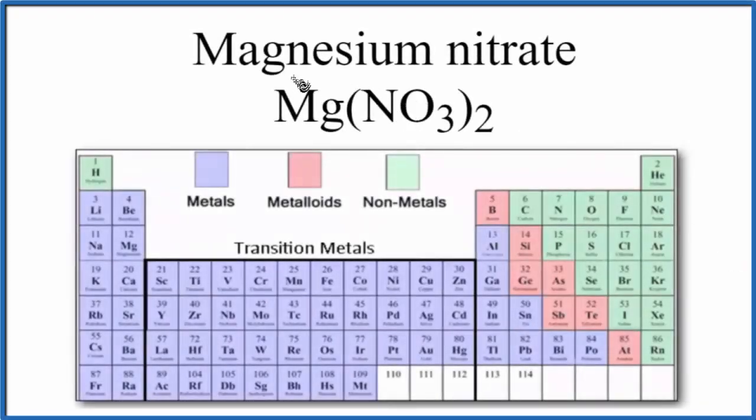In this video, we'll look at whether magnesium nitrate, Mg(NO3)2, is ionic or covalent. The short answer is that the entire compound is an ionic compound. But within the nitrate ion, within this NO3, we do have covalent bonds.